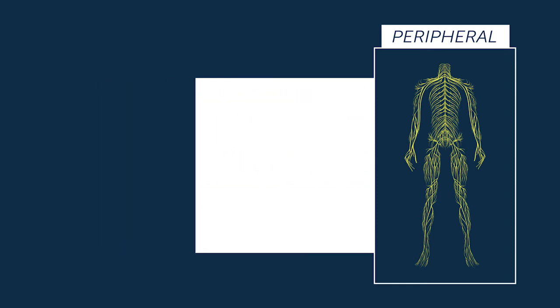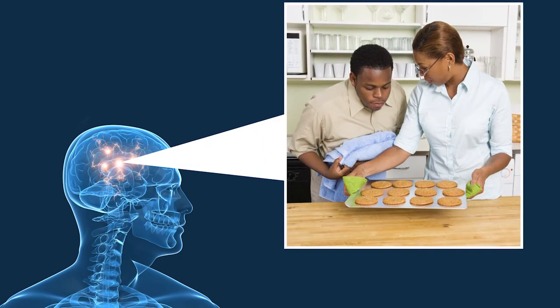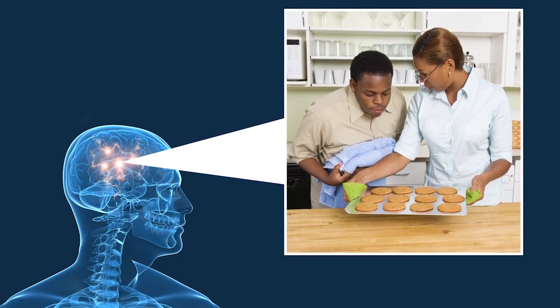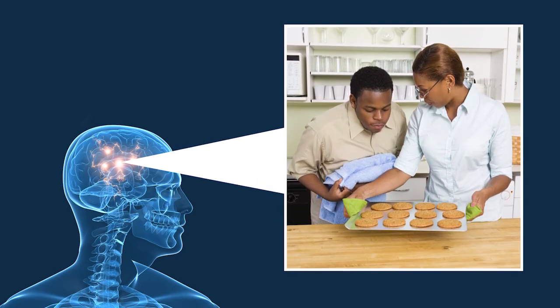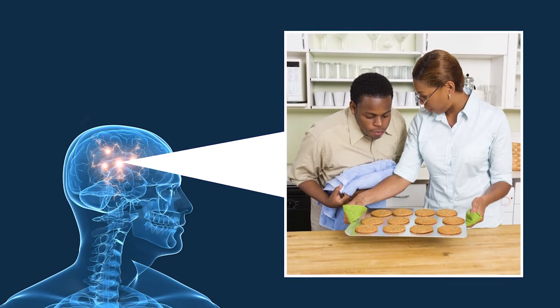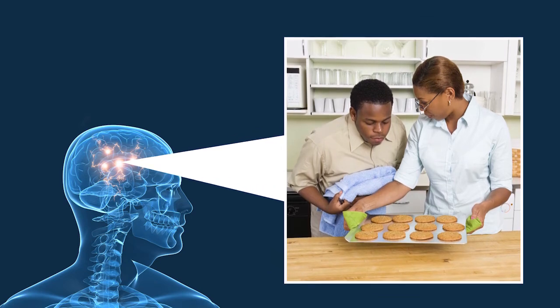Most of the time, information from the peripheral nervous system is processed by the brain. For example, when you smell cookies baking, the information is processed by the brain. In response, the brain sends signals to cause your mouth to water and make your muscles move so you can walk to the kitchen.